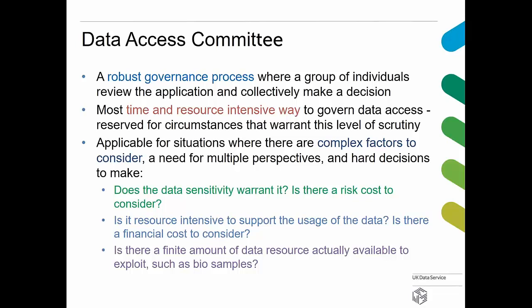Picking up on the five safes model, I'm focusing on the safe project strand and how governance is enacted around that. There's a distinction between governance around the people doing research and governance around projects and research intention itself. I'll focus on the project application journey. A data access committee — there are various names for such a body — is where a group of people look at individual applications for projects and collectively decide whether to grant access. It's time and resource intensive, so it needs to be reserved for situations warranting that level of scrutiny.